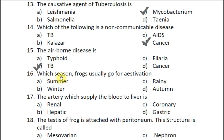Question sixteen: In which season do frogs usually go for aestivation? A summer, B winter, C spring, D autumn. The correct answer is A summer. It is also called summer sleep.